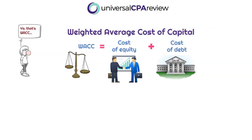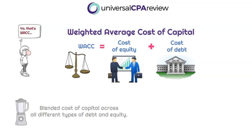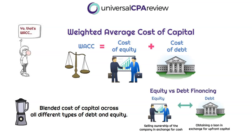Weighted average cost of capital is basically considered to be the blended cost of capital across different types of debt and equity. A company can have debt or equity financing, and most companies have both. It's not always a 50% to 50% ratio — some will have more debt versus equity and some will have more equity versus debt.